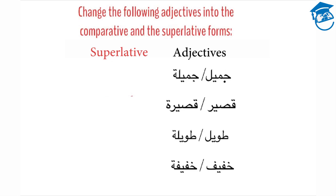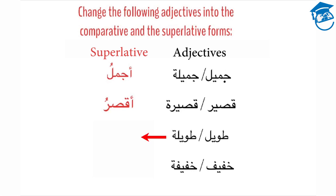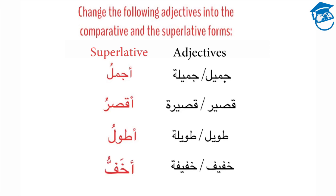For jamil and jamila meaning beautiful, the superlative form is ajmalu. For qasir or qasira meaning short, the superlative form is aksaru. For tawil or tawila meaning tall, the superlative form is atualu. And for khafif and khafifa meaning light, the superlative form is achafif.